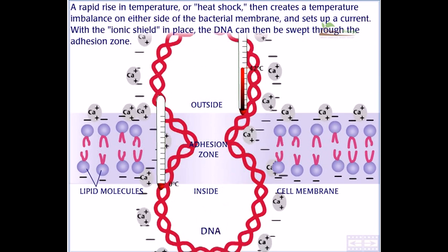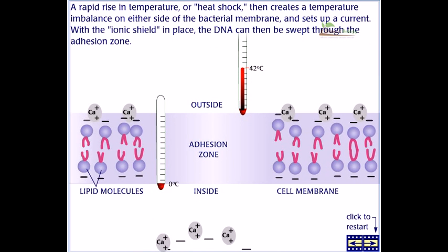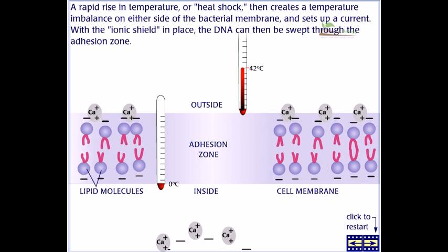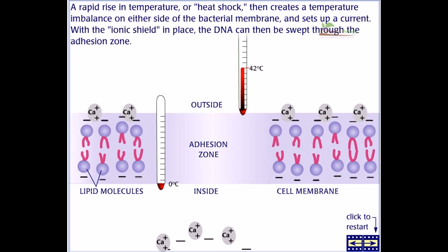A rapid rise in temperature, or heat shock, then creates a temperature imbalance on either side of the bacterial membrane and sets up a current. With the ionic shield in place, the DNA can then be swept through the adhesion zone.